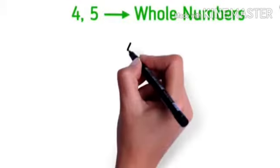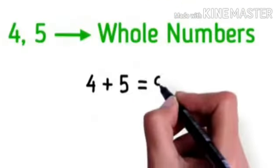We know that 4 and 5 are whole numbers. What is 4 plus 5? It's 9.